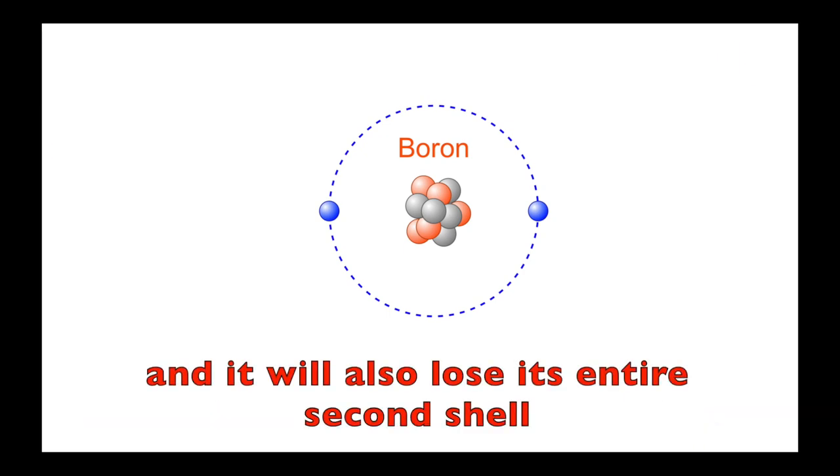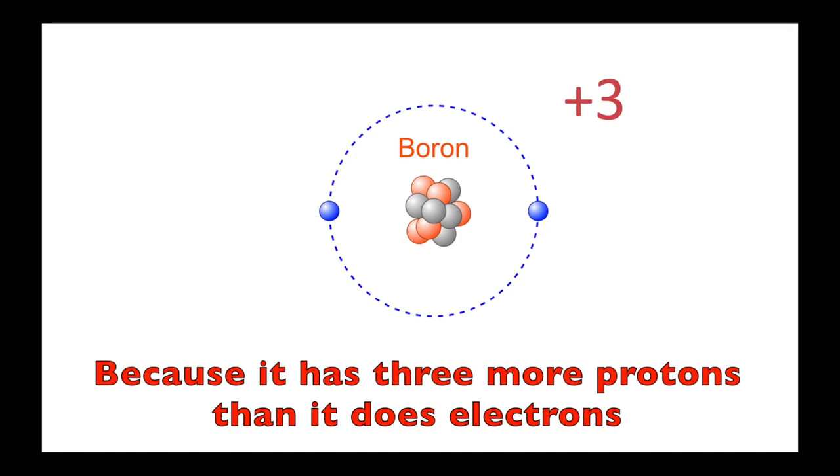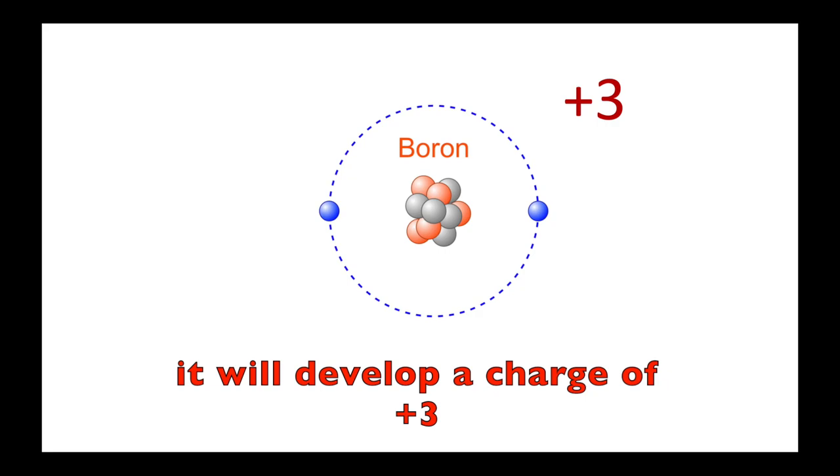Boron will also lose its entire second shell. Because it has three more protons than it does electrons, it will develop a charge of plus three.